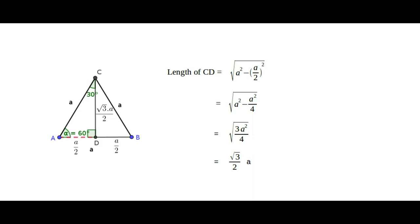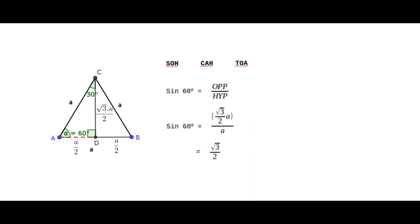Now let us consider the 60 degree angle. To know the ratio for sine 60 degree, let us use the magic word to recall the basic trig ratios — that is SOH-CAH-TOA. SOH means sine is opposite over hypotenuse, CAH means cosine is adjacent over hypotenuse, and TOA means tangent is opposite over adjacent.